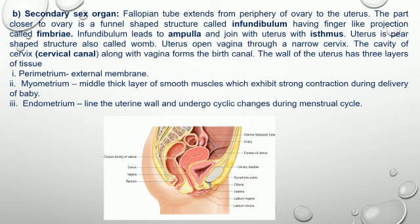The uterus opens into the vagina through a narrow cervix. The cavity of the cervix along with the vagina forms the birth canal. The wall of the uterus has three layers: perimetrium, the external membrane; myometrium, the middle thick layer of smooth muscles which exhibits strong contractions during delivery of the baby; and endometrium, which lines the uterine wall and undergoes cyclic changes during the menstrual cycle.